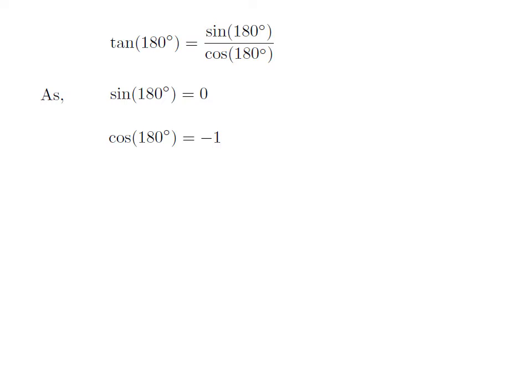We know the value of cosine of 180 degrees is equal to minus 1. How to find the value of cosine of 180 degrees has been explained in the video appearing in the upper right corner. The URL address of the video has been mentioned in the description section as well.